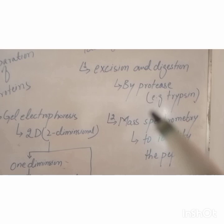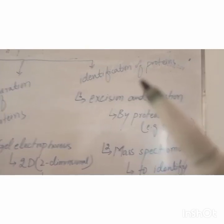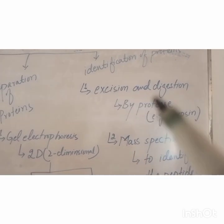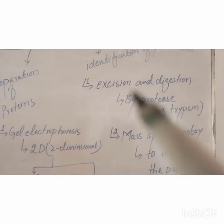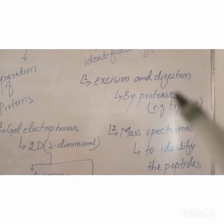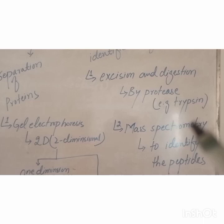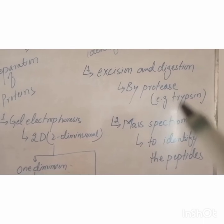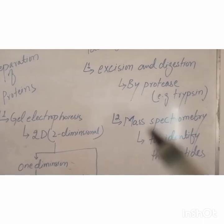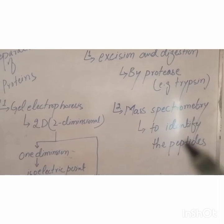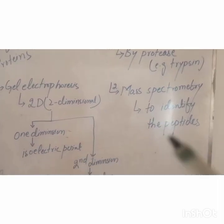Fourth is identification of proteins. First, proteins are excised and digested. Excision and digestion is done by using protease enzymes, for example trypsin. After digestion, mass spectrometry is used to identify the peptides.